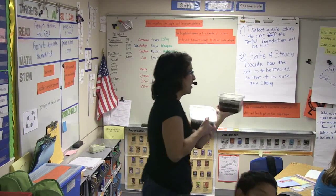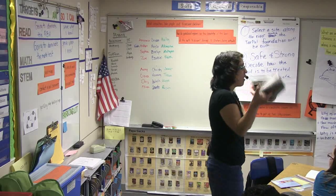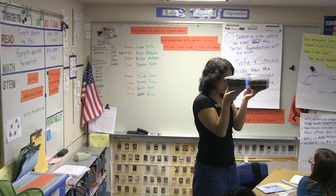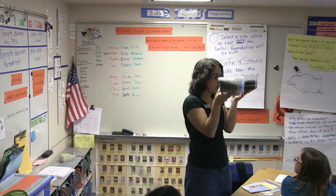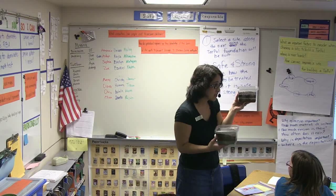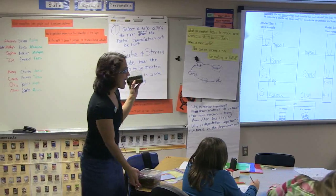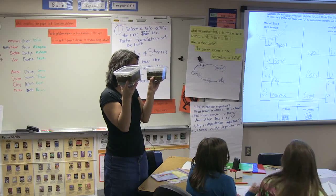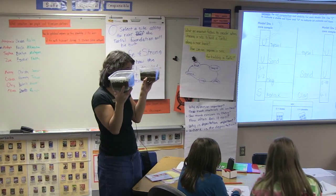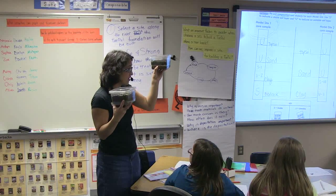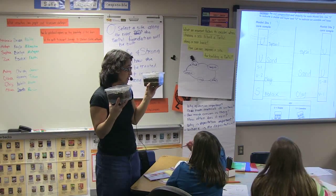So we kind of have a mix here on the bottom one. Here is model site two, here is model site one. You are comparing — looking at both of them. We know that the further down we go, the more stable it becomes. If you had to build a building, which one's the better site to pick? One.